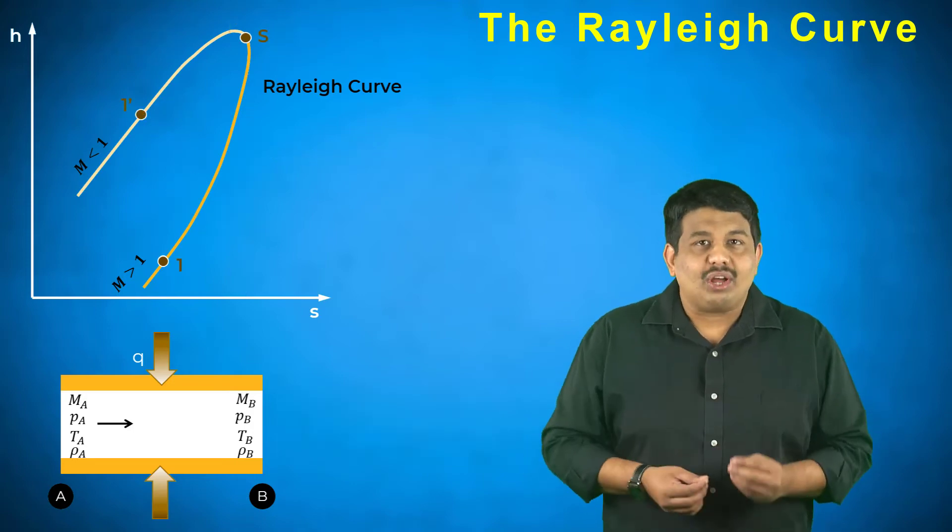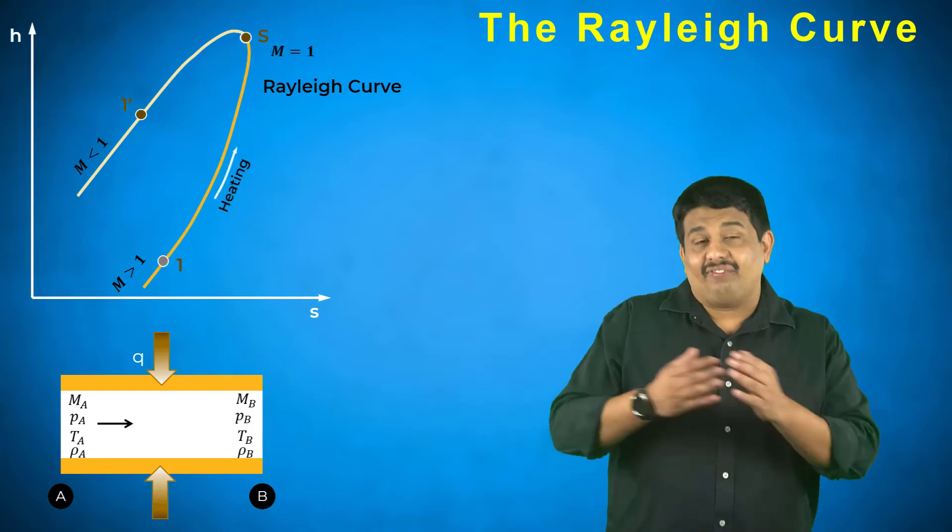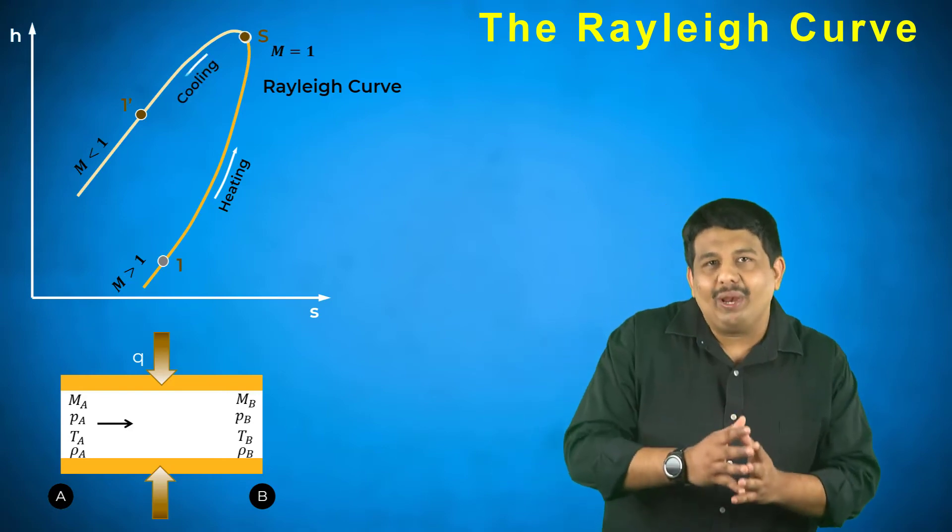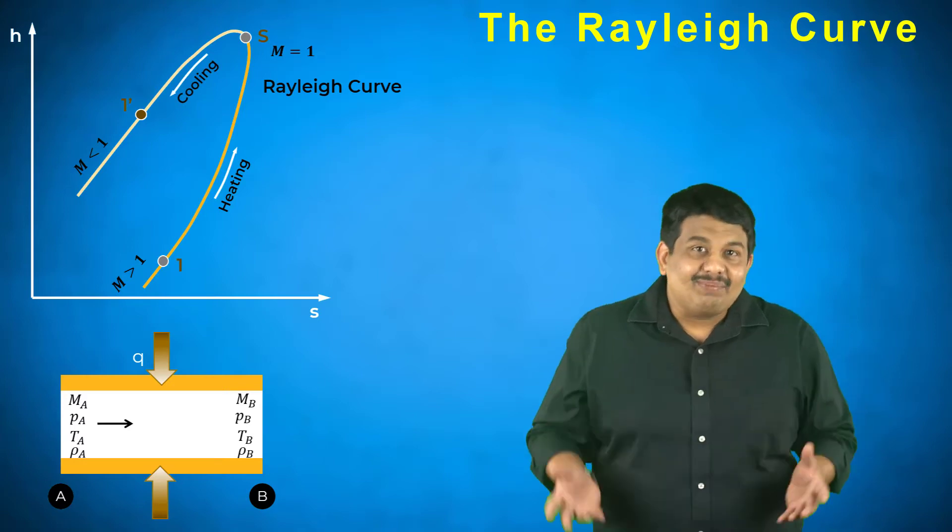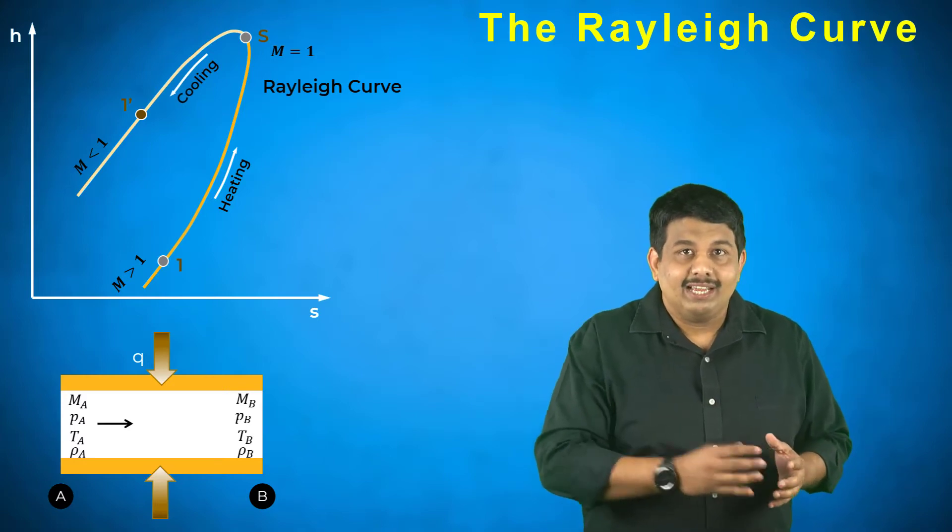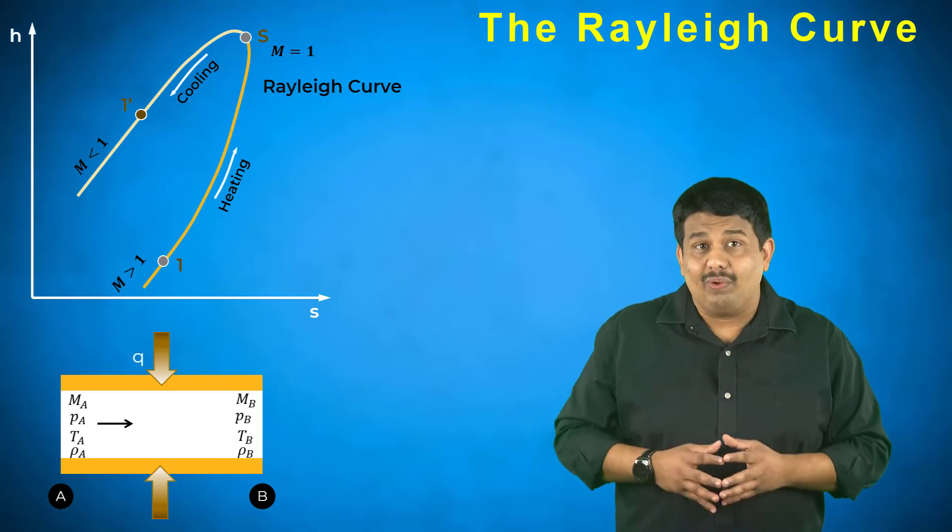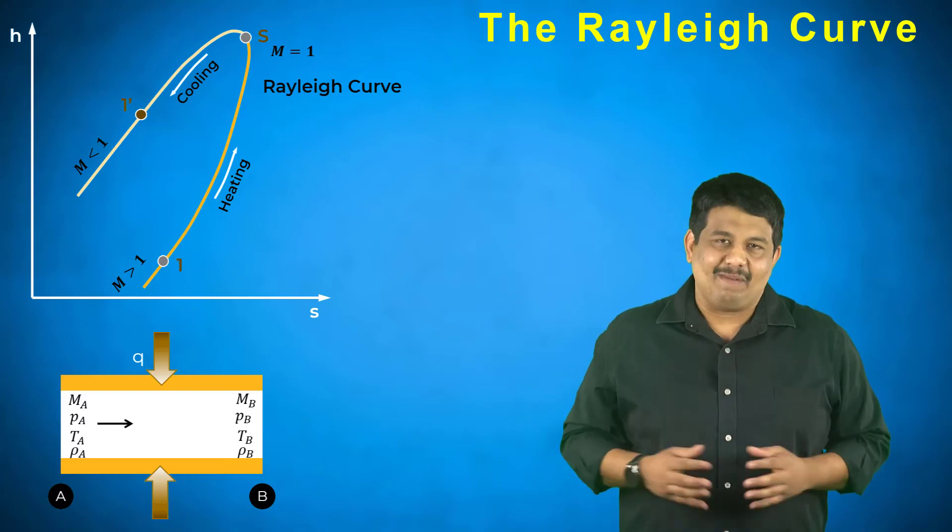From the Rayleigh curve, it is observed that a supersonic flow becomes subsonic by adding heat first until the flow becomes sonic and then cooling it thereafter. Similarly, a subsonic flow can be accelerated to the sonic conditions by adding heat and any subsequent heat removal will further accelerate the flow to a supersonic Mach number.